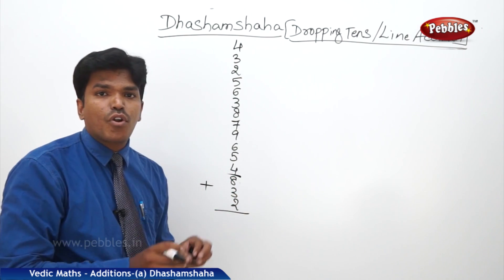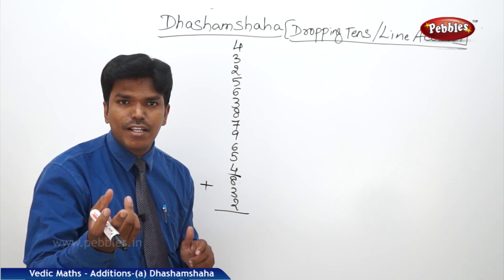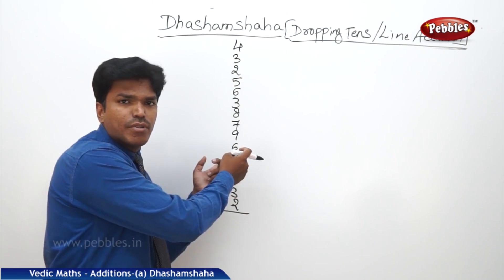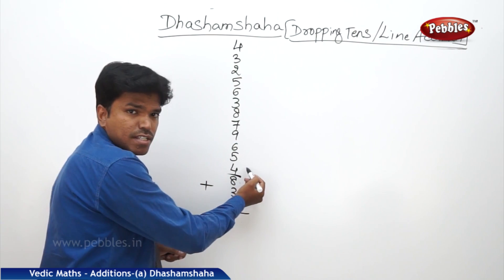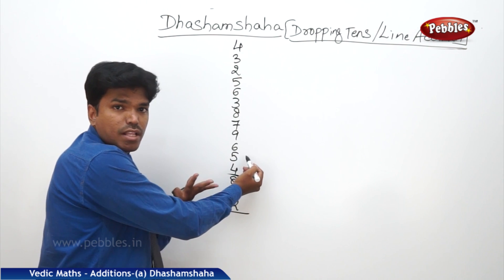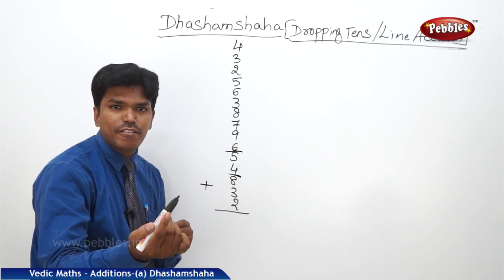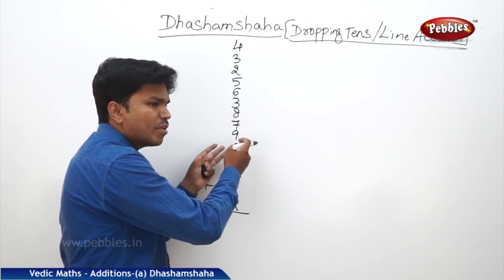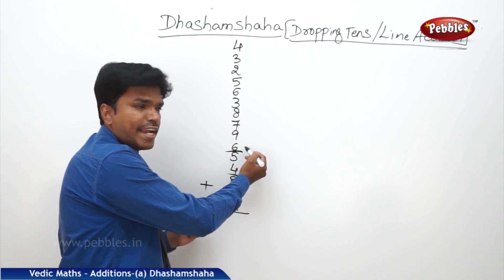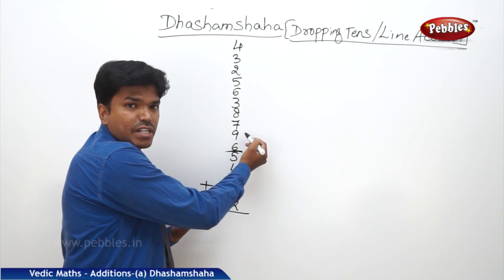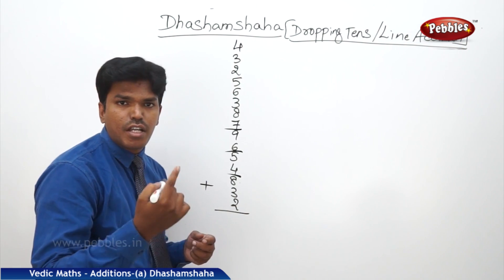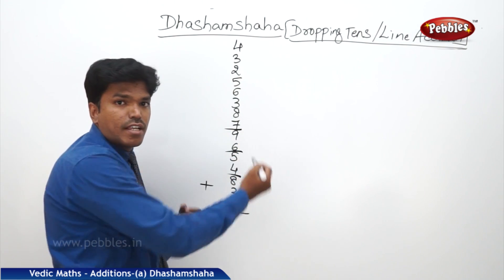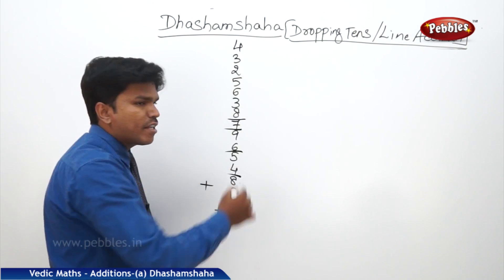Out of 13, I have dropped a 10. The remaining is 3. Immediately carry the 3 to the next number. What is 3 plus 4? 7. 7 plus 5? 12. Again more than 10, so drop a 10. The remaining is 2. Immediately carry this 2 to the next number. 2 plus 6? 8. 8 plus 9? 17. So again drop a 10. Remaining is 7. 7 plus 7? 14. Again more than 10, so drop a 10. What is the remaining? 4.